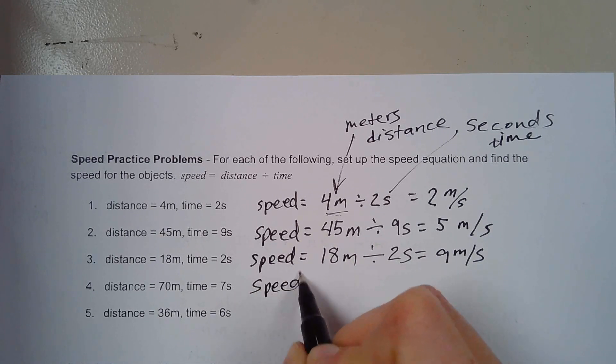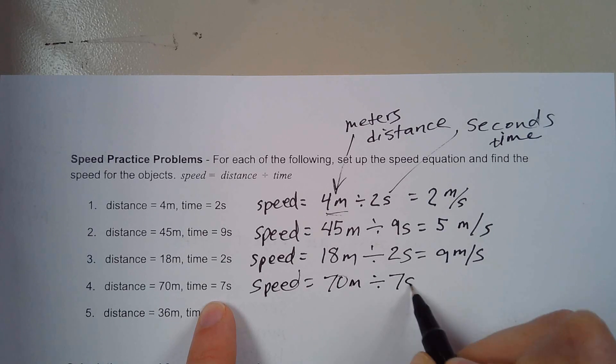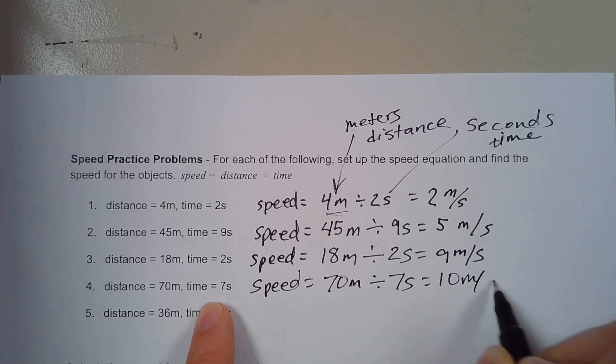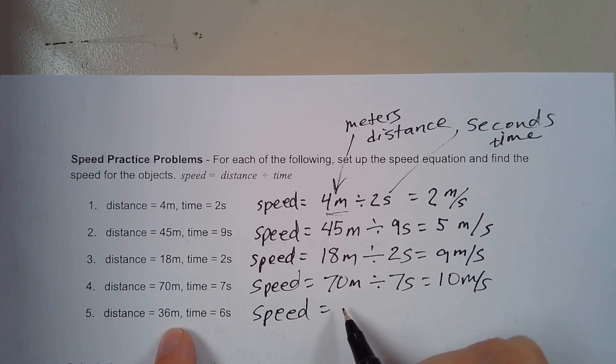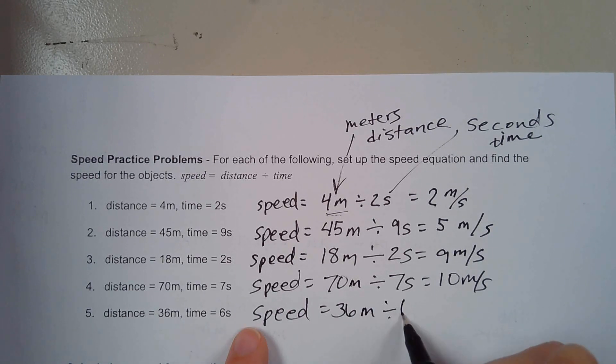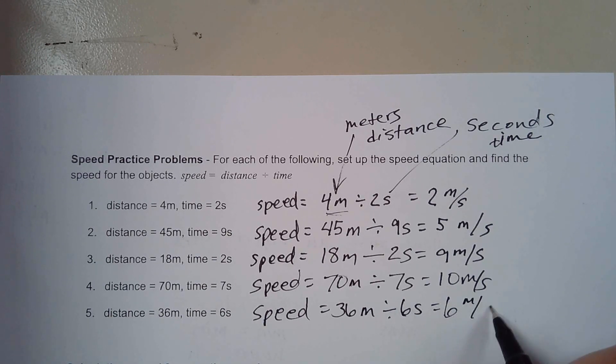For this one, speed equals 70 meters divided by seven seconds is 10 meters per second. And then this last one, speed equals 36 meters divided by six seconds, which equals six meters per second.